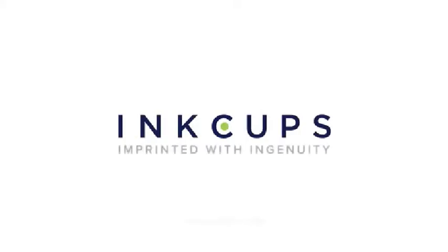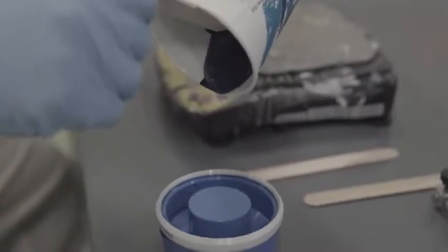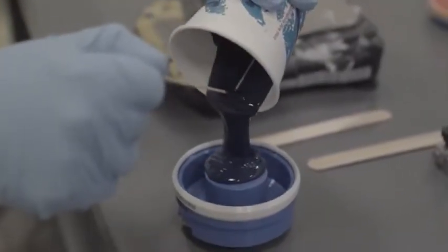Start by prying off the lid of the can of ink. Pour the ink into the cup, keeping a careful eye on the scale.